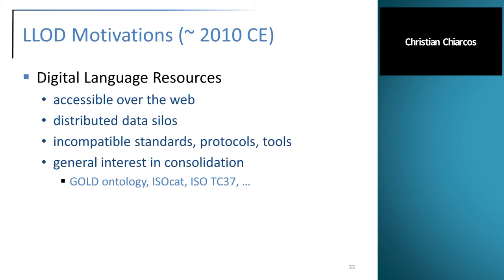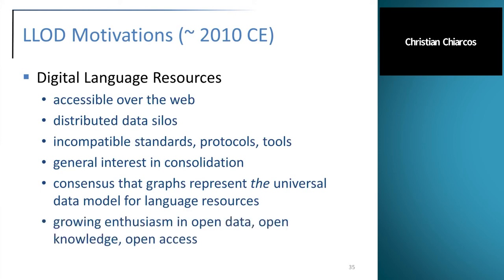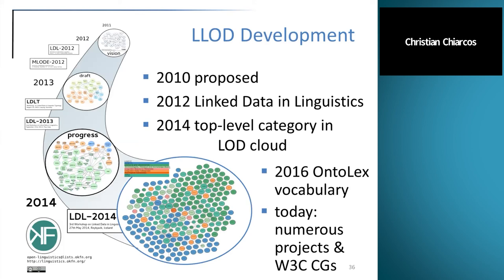Sometimes those incompatibilities were vividly defended by their respective user and developer communities. At the same time there was general interest in consolidation — for example, there was the GOLD ontology, ISOcat, and a number of ISO standards in development. There was also consensus that graphs represent the most general way to model language resources. Different concepts had been introduced — annotation graphs, directed acyclic graphs, feature structures — but in the end they can all be reduced to graphs, which is exactly what RDF technology provides. This, together with growing enthusiasm about open data and open access, led to the proposal of creating a linguistic linked open data cloud, which materialized in 2012 as a result of a workshop, an associated book, and a hackathon. In 2014 it was recognized as a top-level category in the linked open data cloud.